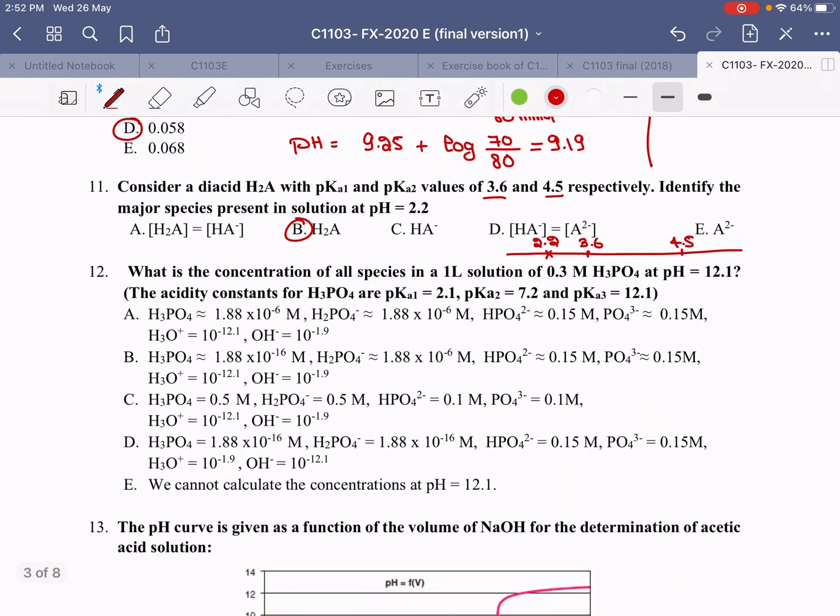Number 12. What is the concentration of all species in a 1-liter solution of 0.3 molar H3PO4? This is a lot of questions, but let's change the pH.